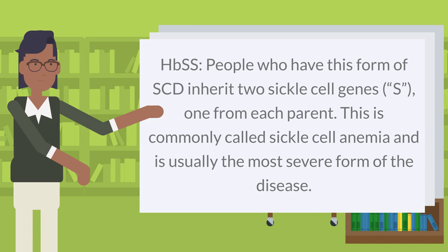HbSS: People who have this form of SCD inherit two sickle cell genes (S), one from each parent. This is commonly called sickle cell anemia and is usually the most severe form of the disease.